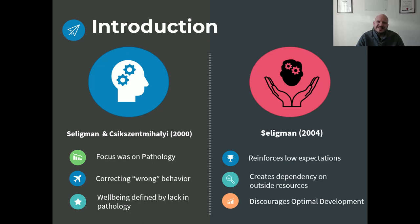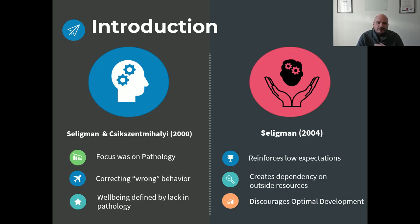We really focused on these negative-oriented aspects and became very good at trying to fix the things that are wrong — looking at where people deviate from the norm and trying to get them from pathology to normal. From this perspective, optimal functioning was defined by the lack of pathology. But we know that just because I don't have issues doesn't mean I'm living the best possible version of who I am.